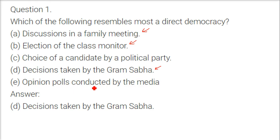Opinion polls conducted by the media involve more people, but we will still go with option D — decisions taken by Gram Sabha — as the best example of direct democracy.